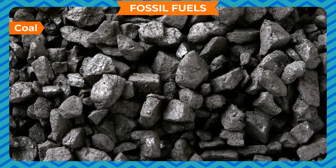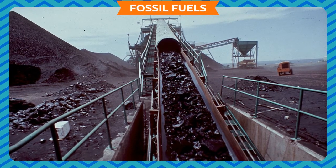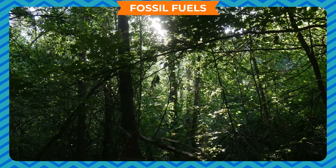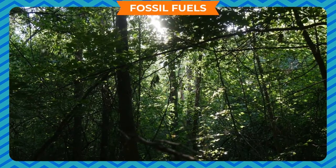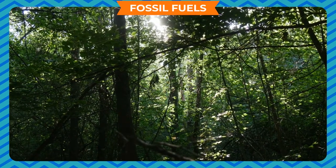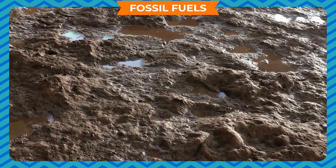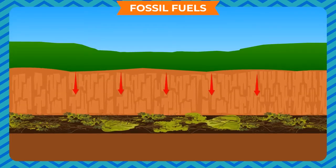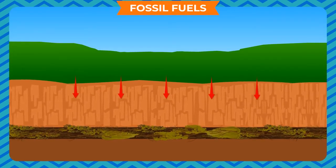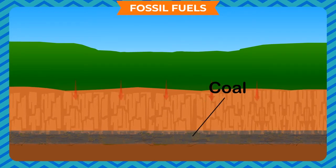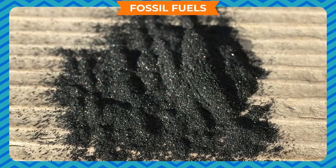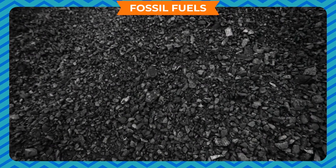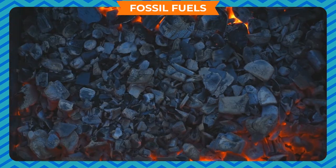Coal is a fossil fuel. It is black in color and hard. It is formed as a result of decay and burying of remains of plants. About 300 million years ago, the earth was covered by dense forests. Due to some climatic changes, they died and were then covered by mud and sand. Volcanoes and earthquakes added to the debris collected over these trees. Under the heat and pressure of the earth, the trees got converted into coal. Coal contains carbon. The process of conversion of wood into carbon is called carbonization. The age when this process took place is called the carboniferous age.